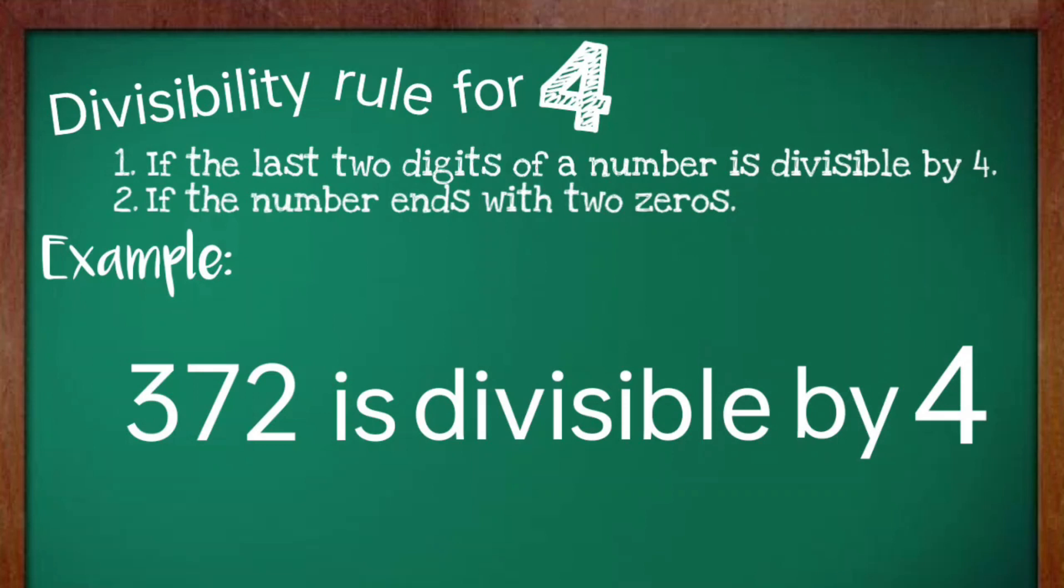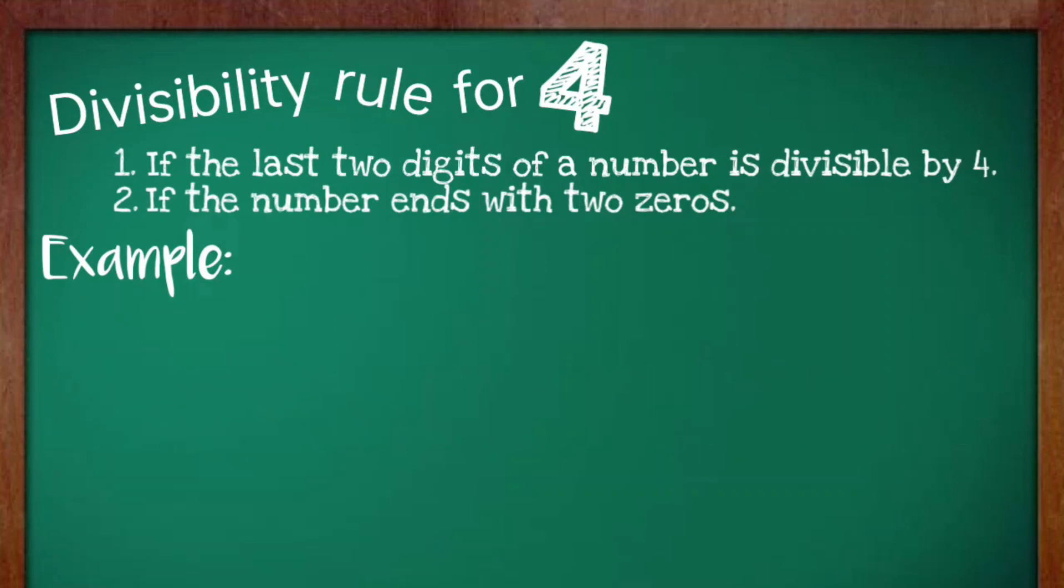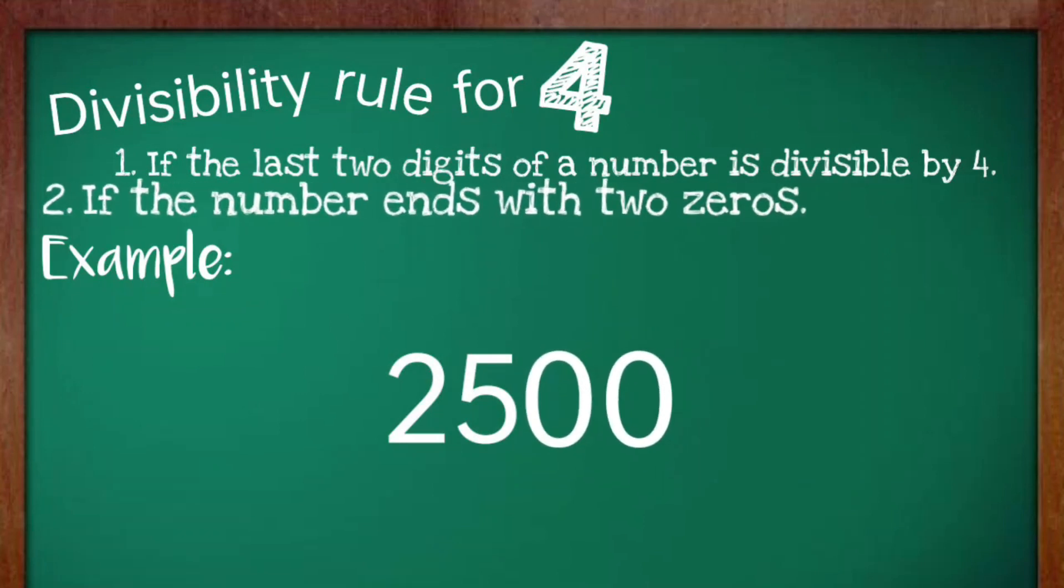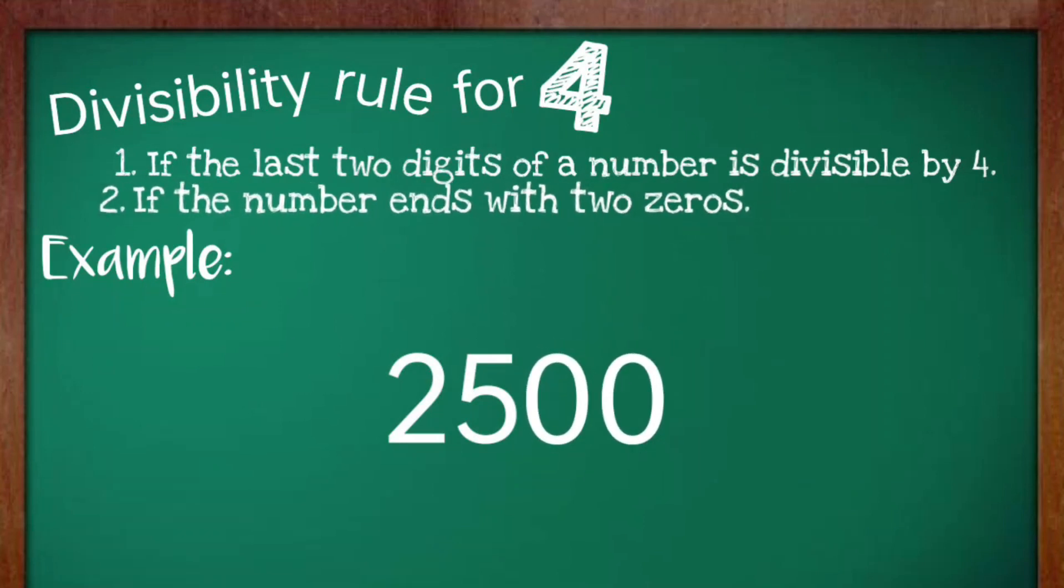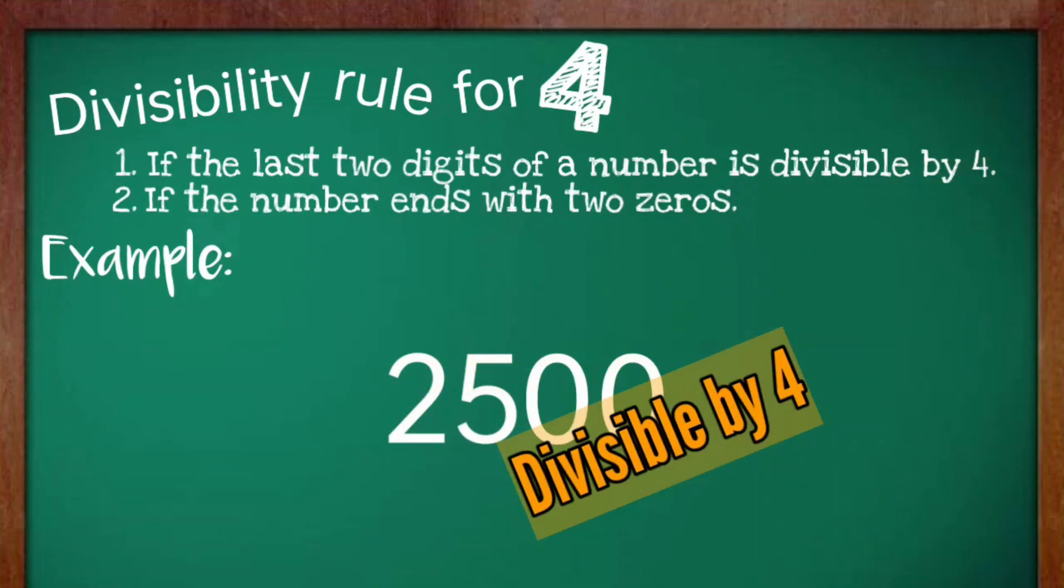Now, let's have another example. Let's try 2,500. Since the number ends with two zeros, the second rule takes place, hence making it divisible by 4.